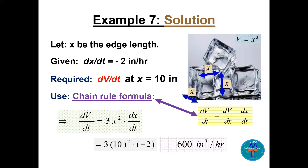The volume of the cube is V = x³. Using the chain rule: dV/dt = dV/dx times dx/dt = 3x² times (−2). At x = 10: dV/dt = 3(100)(−2) = −600 cubic inches per hour.